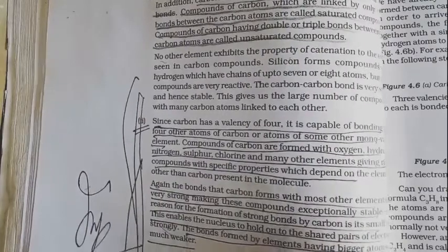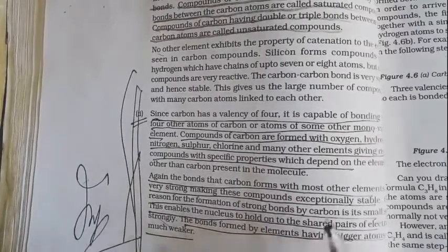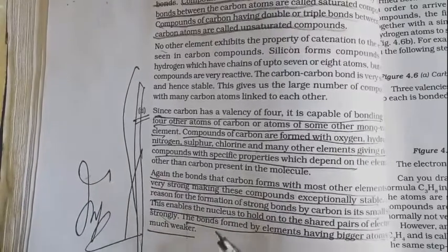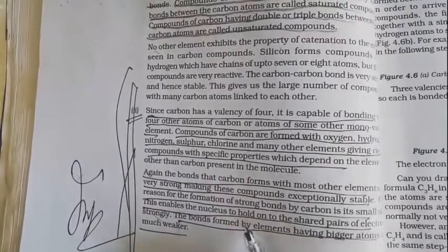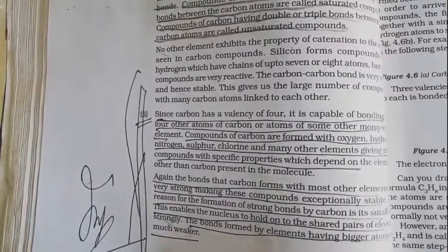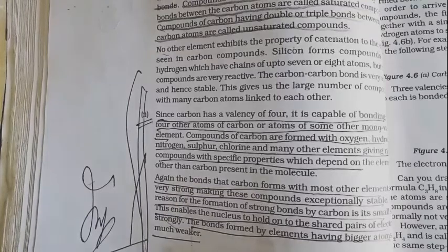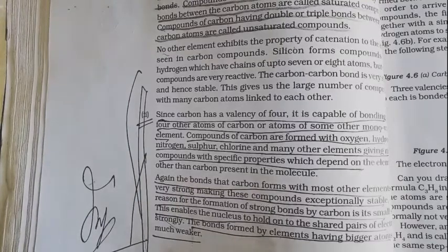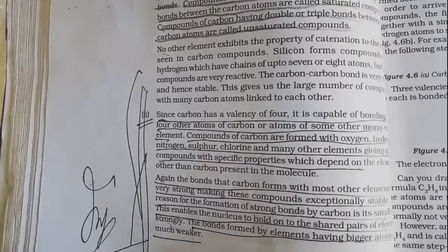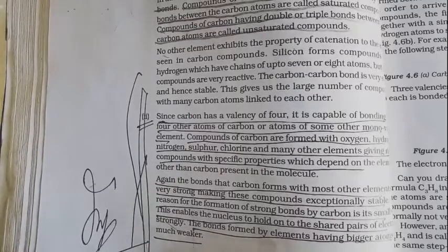The bonds that carbon forms with most other elements are very strong, making these compounds exceptionally stable. One reason for the formation of strong bonds by carbon is its small size. This enables the nucleus to hold on to the shared pair of electrons strongly, keeping them tightly bound.